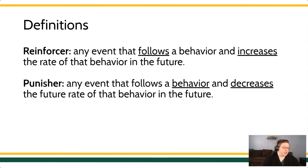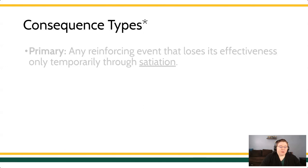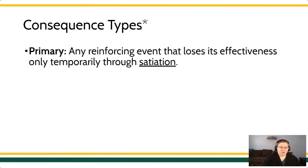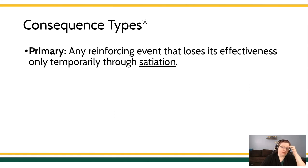This is where we start talking about the classes of stimuli. For this part of the presentation, I'm just going to focus on reinforcers for now, but bear in mind that this also applies to punishers. When we talk about a primary reinforcer or punisher, it's any event that loses its effectiveness only temporarily and only through satiation. Satiation is when you've had a lot of something and then it loses its effectiveness.